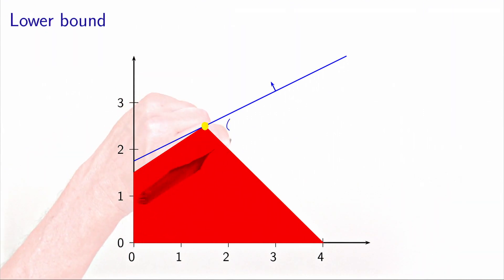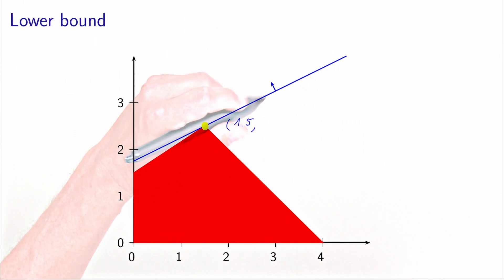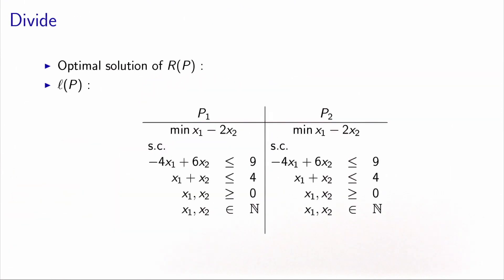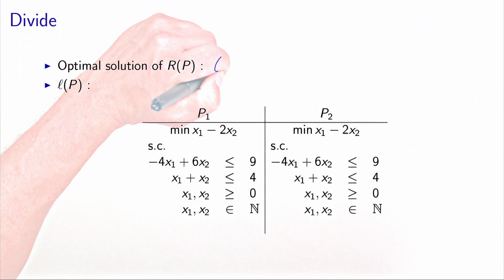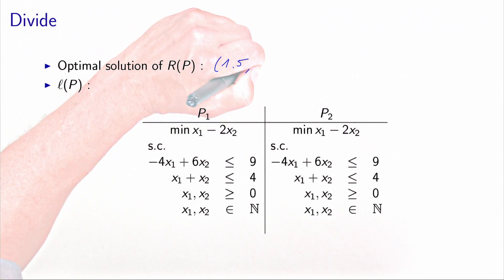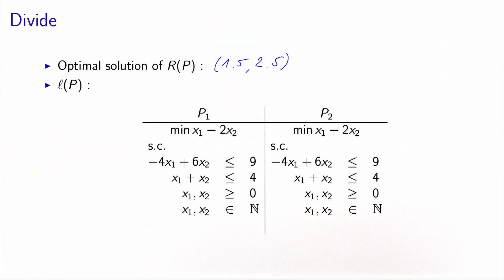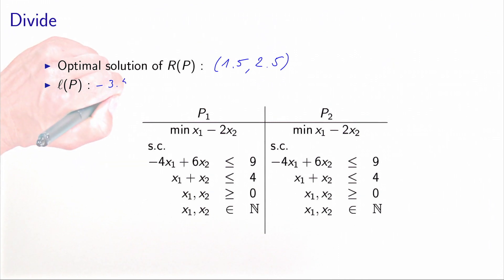The optimal solution of the relaxation is x1 = 1.5 and x2 = 2.5. We can calculate the lower bound as the value of the objective function at that point. In that case, it's minus 3.5.